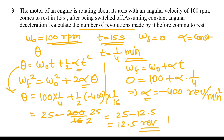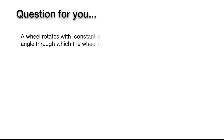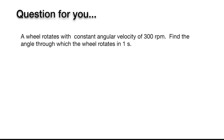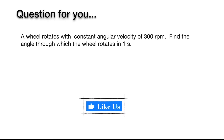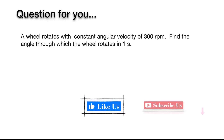Alternatively, you can convert 100 rpm to rounds per second and keep time as 15 seconds — you will get the same answer. Now here is a question for you: A wheel rotates with a constant angular velocity of 300 rpm. Find the angle through which the wheel rotates in one second. Put your answers and suggestions in the comment box. I hope you enjoyed today's session. If you learned something new, please click the like button and subscribe for similar videos. Thank you for watching — see you next time!